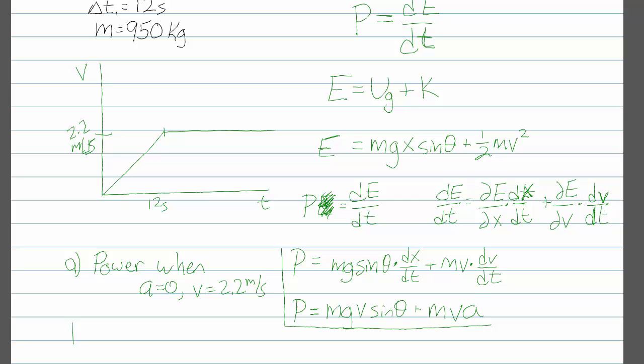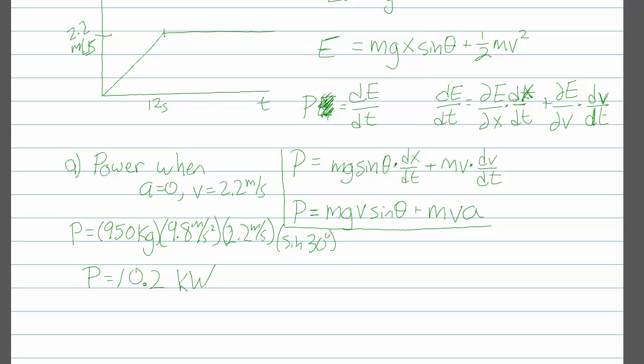And we know that at that time, our velocity is our final velocity of 2.2 meters per second. Well, we can plug in numbers right away for that. It's just going to be the first term in our power equation, mgv sine theta. So 950 kilograms times 9.8 meters per second squared times 2.2 meters per second times the sine of 30 degrees comes out to be 10.2 kilowatts.